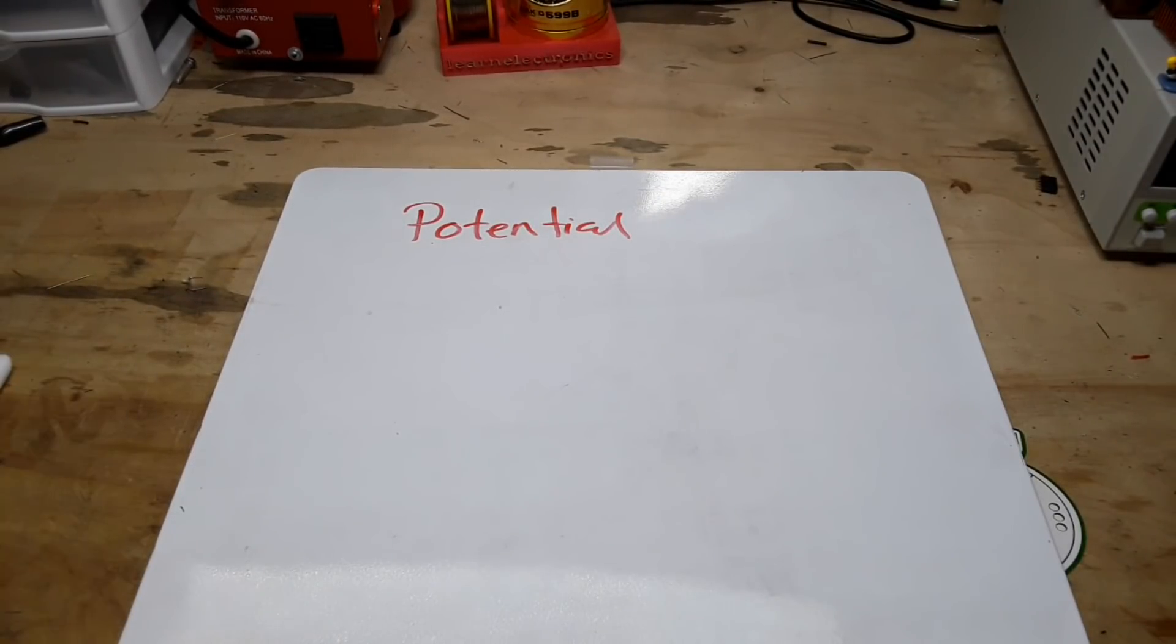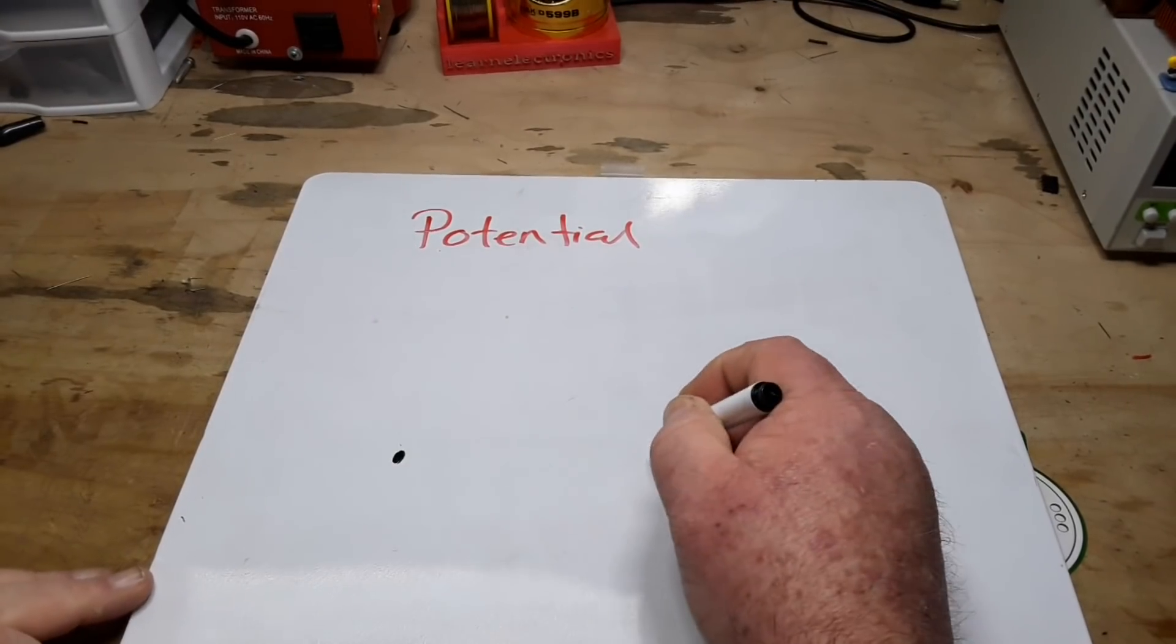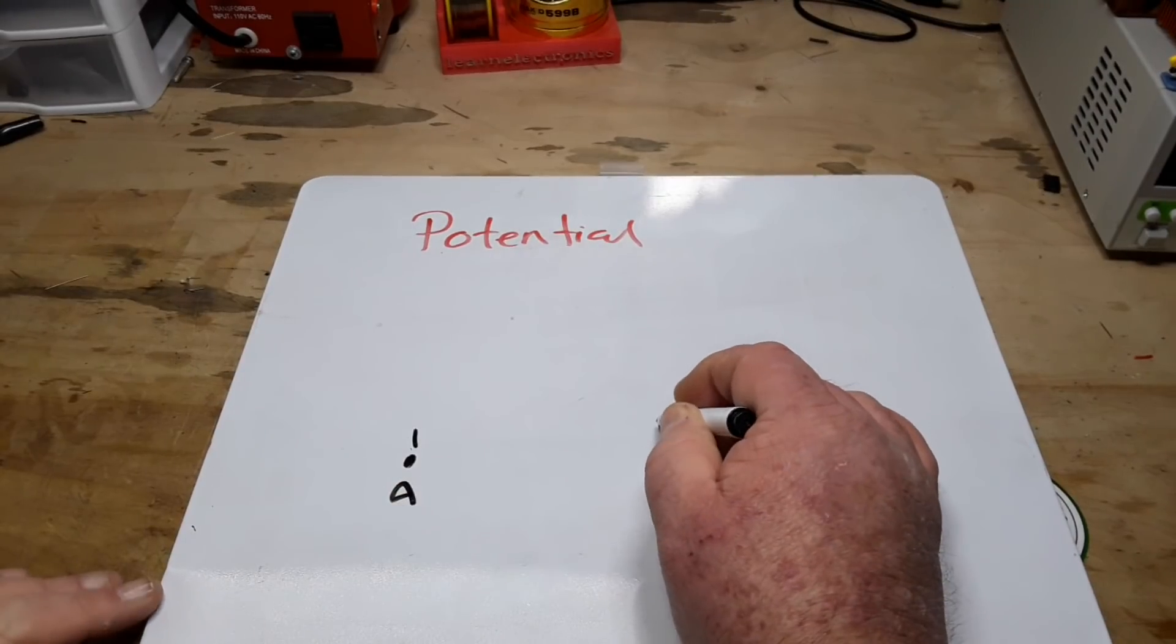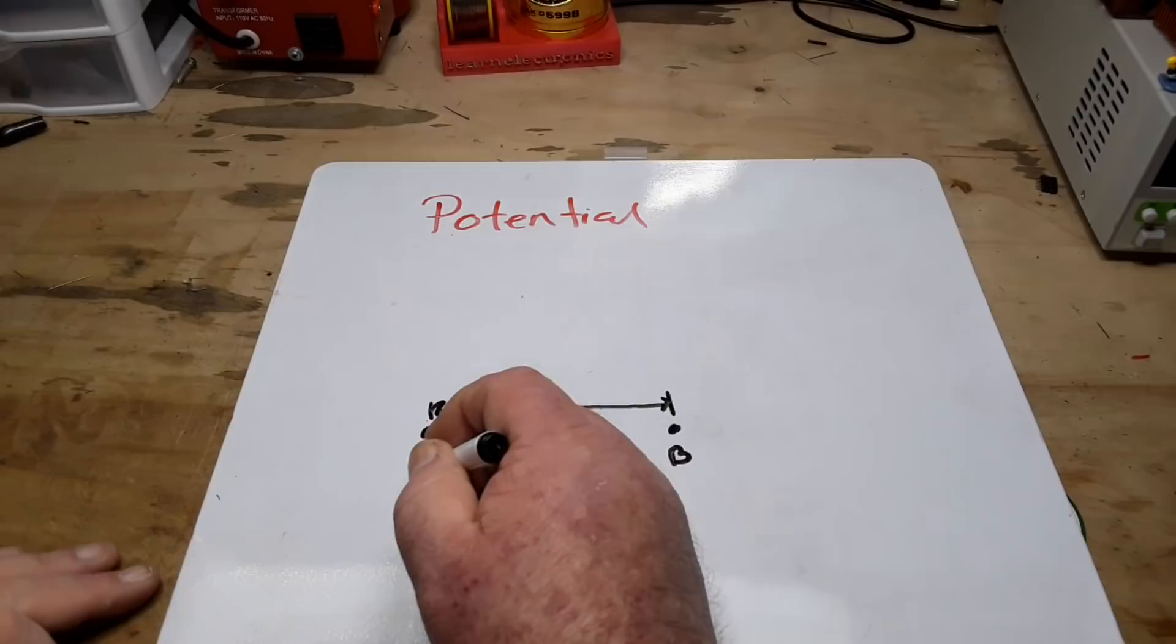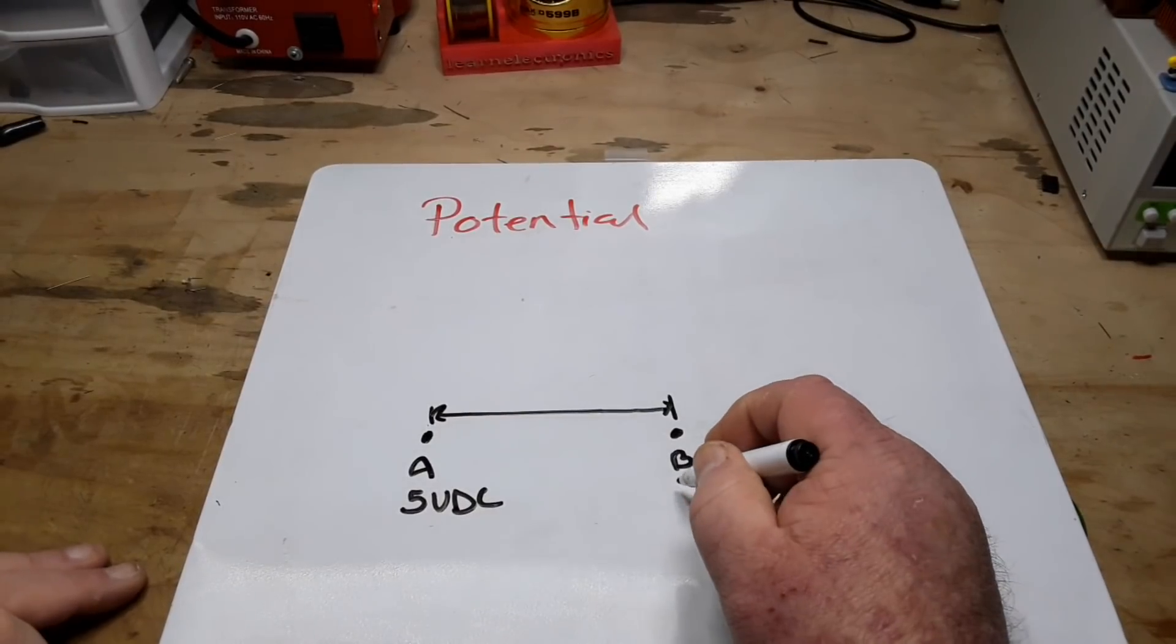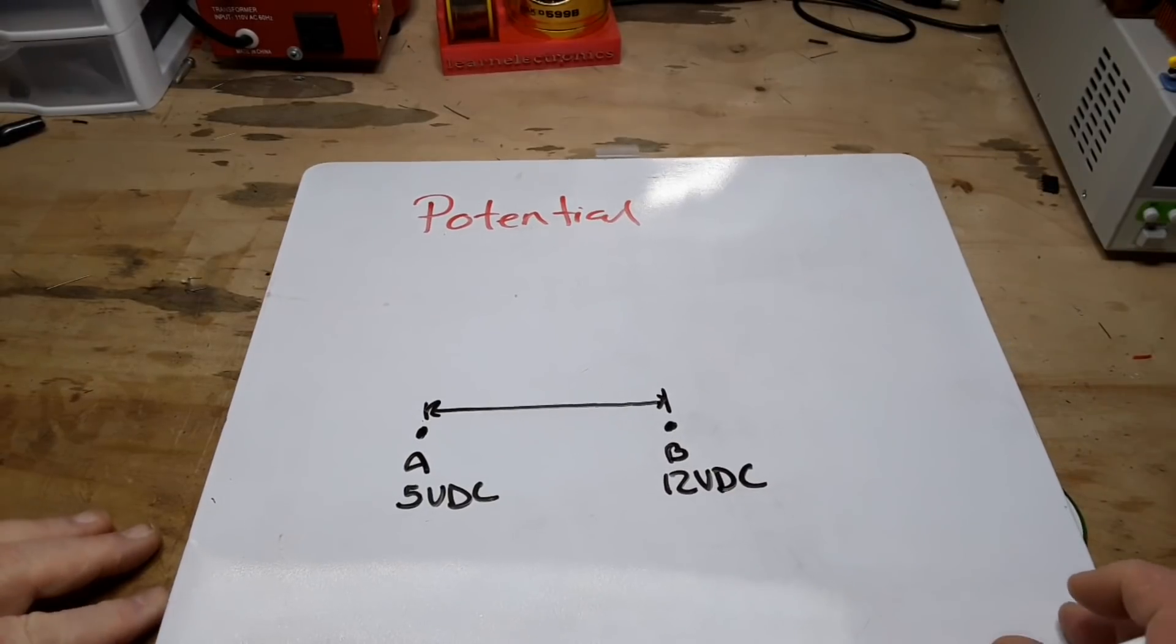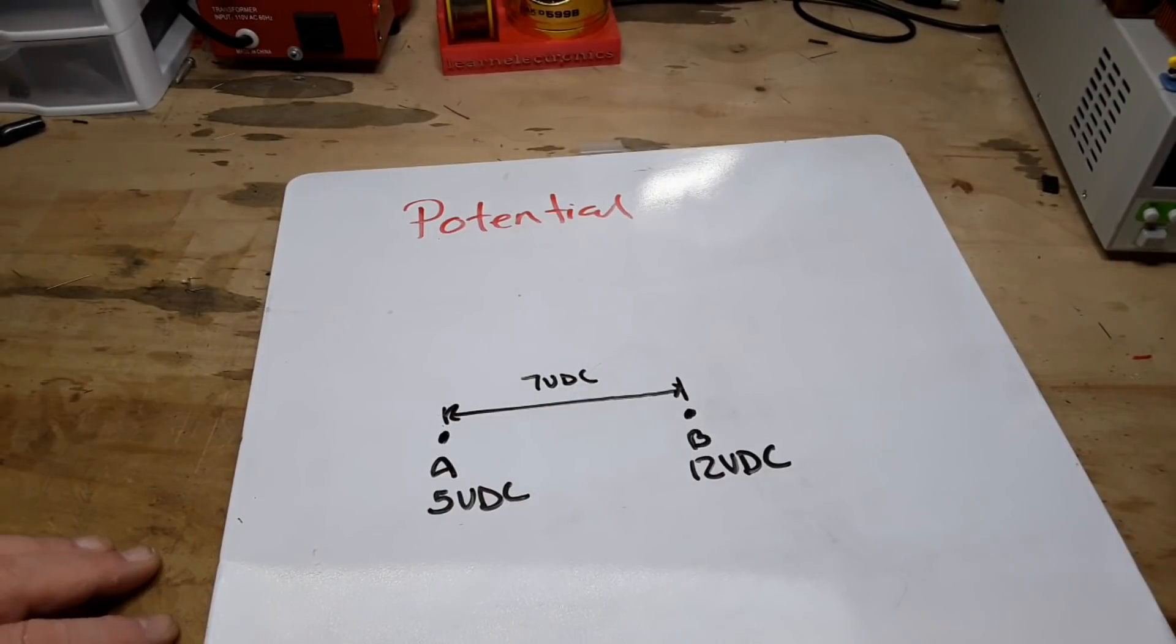All right. I guess we've moved on to potential because we need to explain that as well. That's not hard. Potential is the difference in voltages between two points. Point A, point B. If point A is at 5 volts DC and point B is at 12 volts DC, your potential in this circuit is 7 volts DC.